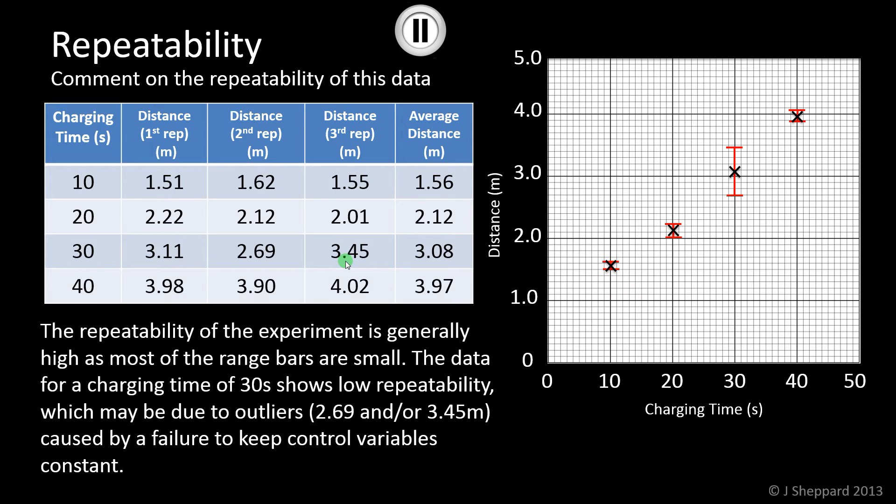In this case, it could have been the brightness of the lamp, the charging lamp, or the distance away that you were holding the car from the charging lamp. The good conclusions to your experiment will have this kind of information in it. That's what repeatability is. Make sure you talk about it and link repeatability to size of the range bars on your graph.